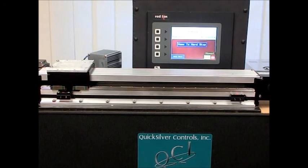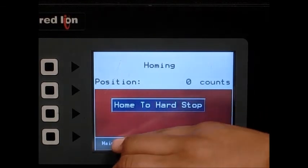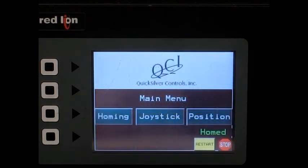Now that the motor is homed, the HMI shows a homed label in green. Now we'll go ahead and go back to the main menu. And now we have two additional functions.